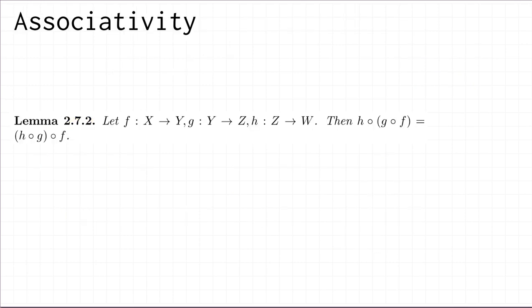The last function property for this video is associativity of composition — you've seen the associative property in two different contexts already; now we'll see it in a third. I'm going to draw a diagram: we have a function f from X to Y, a function g from Y to Z, and a function h from Z to W. So we've got four sets X, Y, Z, and W, with f: X→Y, g: Y→Z, and h: Z→W.